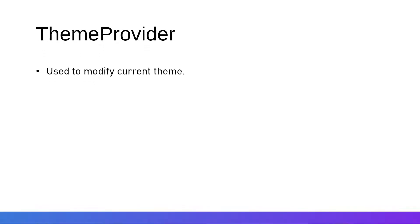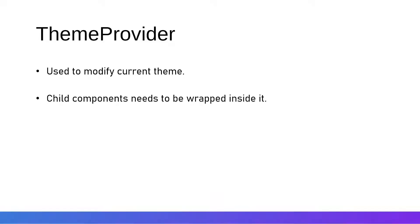Now we will talk about the ThemeProvider. ThemeProvider is used to modify the current theme of Material UI and then provide that to the child components. In it, we can modify the default theme, like the default colors of the primary or secondary, and we can change the breakpoint sizes and much more. The child component needs to be wrapped inside it.